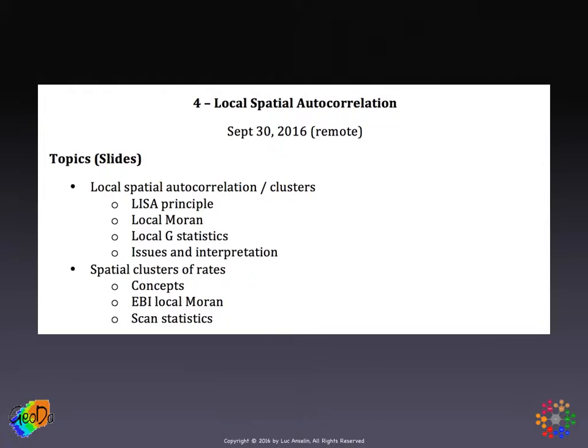Local spatial autocorrelation will start by going over the principle behind local indicators for spatial association, and then its most used case, the local Moran statistic. Then we see a slightly different approach based on a logic from point pattern analysis, which is reflected in the local G statistics — the GI and the GI star statistics.